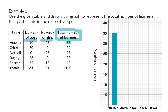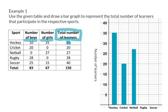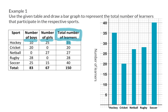Next up is cricket, where we have 20 learners that participated. Then we move on to netball, which had 27 learners. For rugby, we had one more learner, totaling 28. And then for soccer, we had a total of 40 learners. Here we now have a complete bar graph indicating the number of learners that participated in the respective sports.